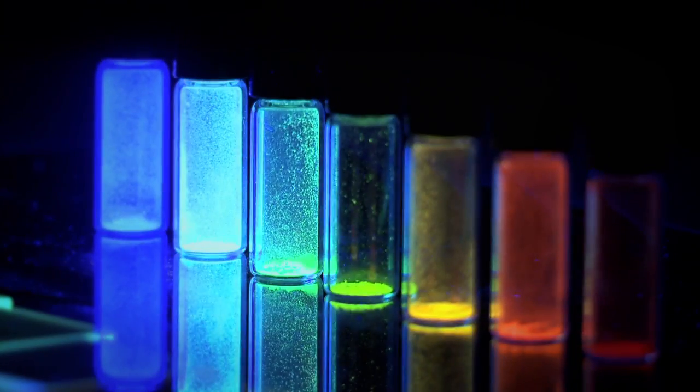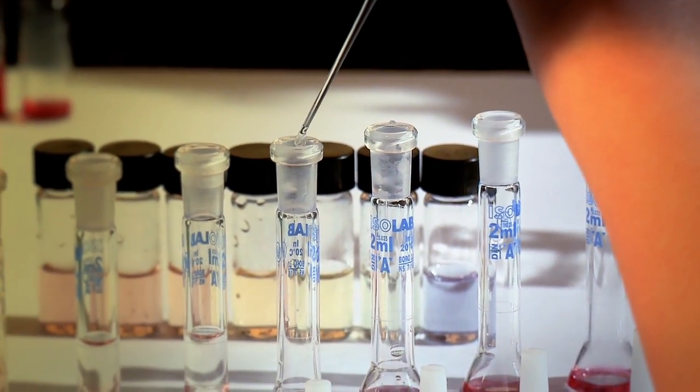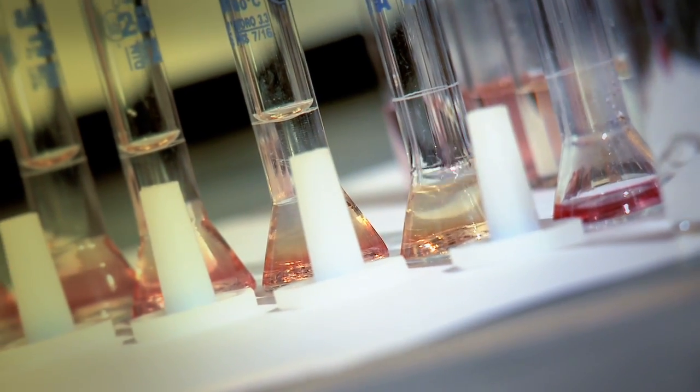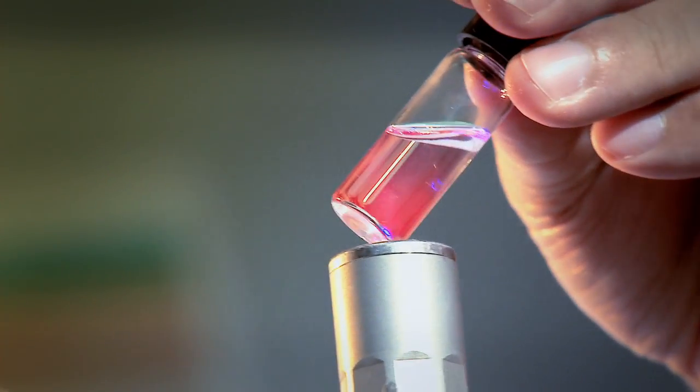You can see the very different colors like rainbow colors here and it's the same compound dissolved in solution, but just the different solvent composition would affect the extent of the interaction between molecules and will give you very different colors. We try to understand how we can control these interactions in order to assemble the molecules.